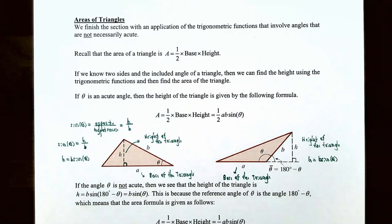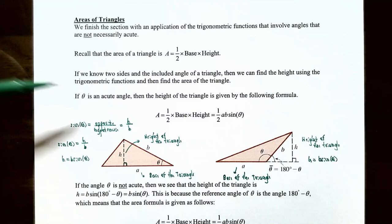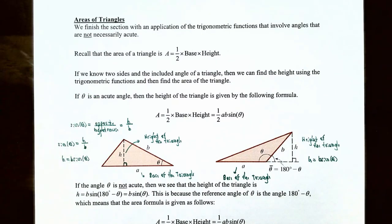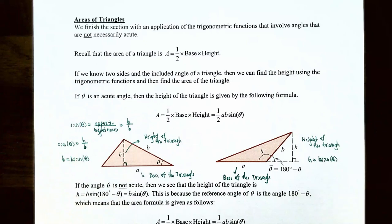Let's finish up this video by talking about areas of triangles. We'll finish the section with an application of trigonometric functions involving angles that are not necessarily acute. Recall the formula for the area of a triangle: area equals one-half times base times height. If you know two sides and an included angle of the triangle, you can find the height using trigonometric functions and then find the area of the triangle.